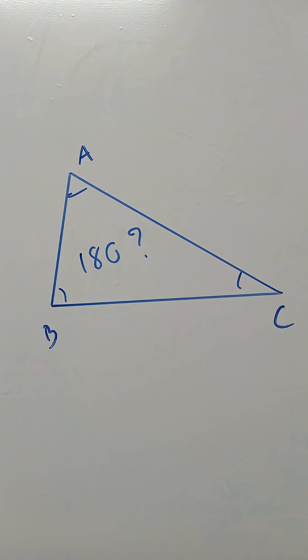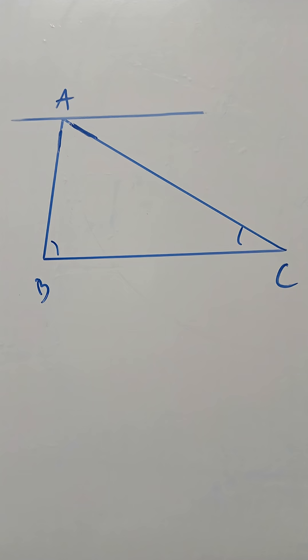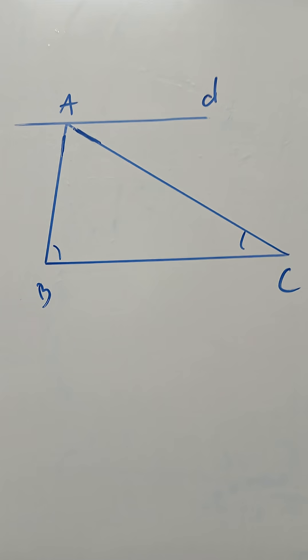Pick a random point, which I would choose the A point. From it, draw a line D, parallel to the segment BC.